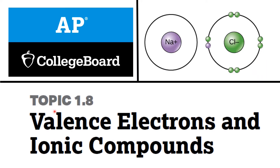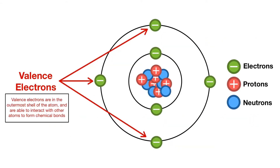Hello everyone, this is topic 1.8: valence electrons and ionic compounds, taken from AP Chemistry College Board. In topic 1.5, which covered electronic configuration, I already explained valence electrons and core electrons. But briefly, let me tell you again what valence electrons are.